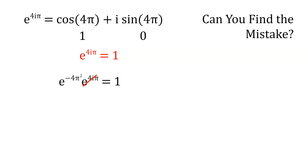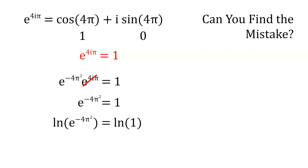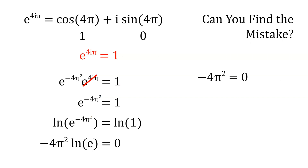We can simplify this equation into e to the power of negative four pi squared is equal to one. Now we can take the natural logarithm of each side, so it becomes ln of e to the power of negative four pi squared is equal to ln of one. ln of one is equal to zero, and we can move the exponent outside of the natural logarithm, and we get negative four pi squared times ln of e is equal to zero. ln of e is just one, so we can cross that out, and the equation becomes negative four pi squared is equal to zero. We divide both sides by negative four, and we get pi squared is equal to zero. Take the square root, and we get pi is equal to zero.